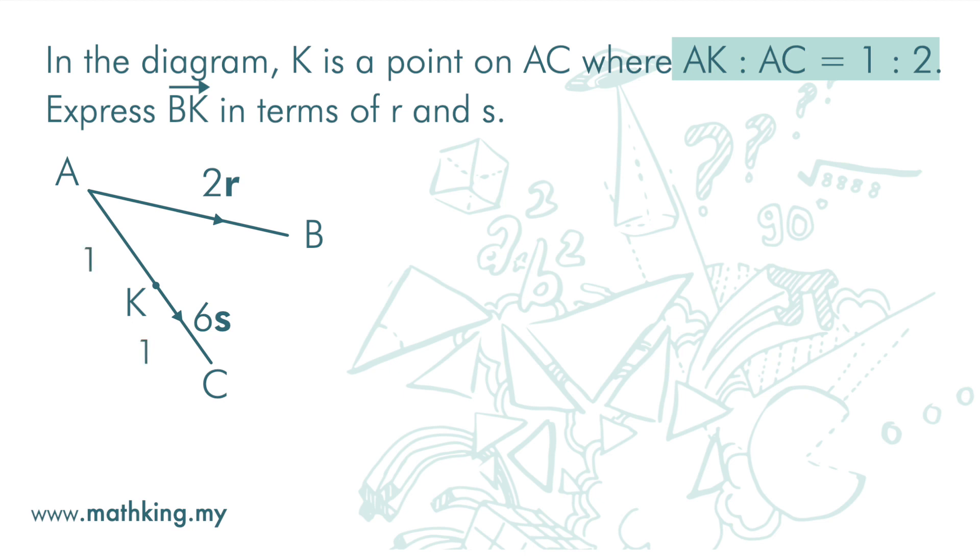Now, we want to find vector BK. Vector BK is BA plus AK, and this is also negative AB plus AK. Negative AB is negative 2R. AK is 1 over 2 of AC. See the diagram.